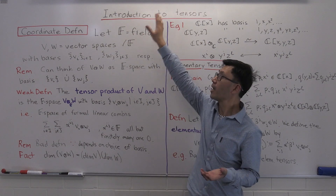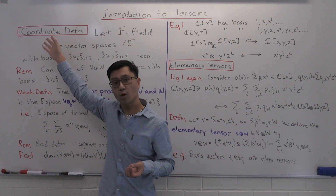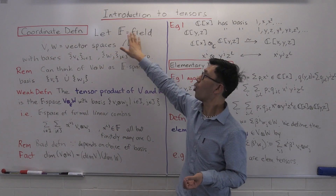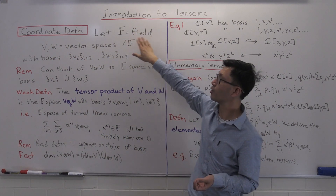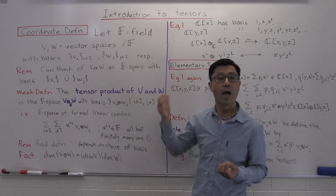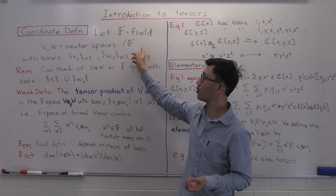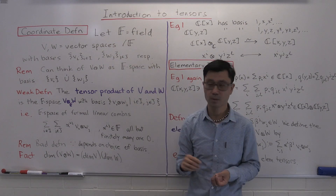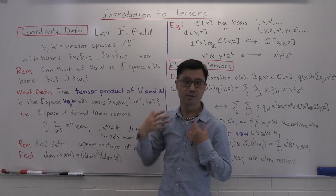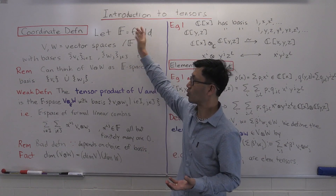The introduction I want to give today starts by looking at what I call the coordinate definition. We start with some base field, which I'll denote with this double-barrel F, and we're going to have two vector spaces V and W over this fixed field F. It's a coordinate definition, which is not the best way to do it, but it gives us a good feel immediately of what this object looks like.